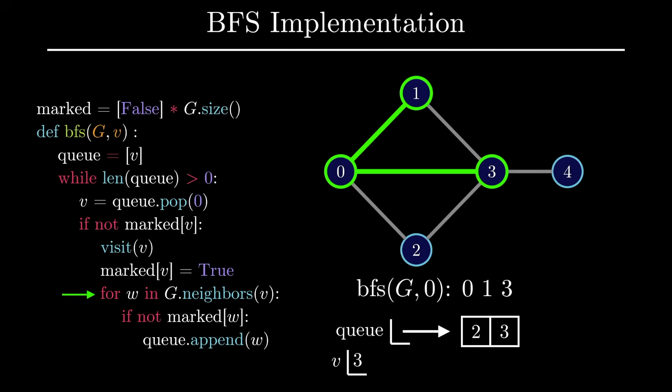Going through vertex 3's neighbors, we add two more vertices to the queue, vertex 2 and vertex 4.